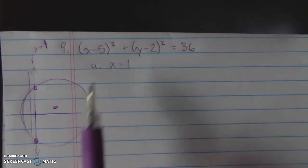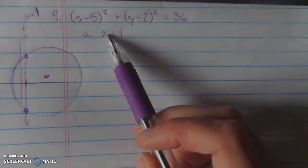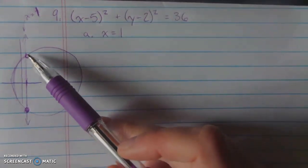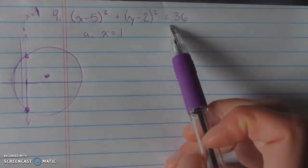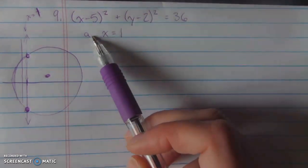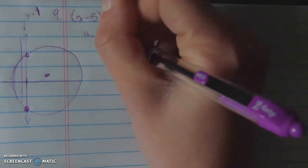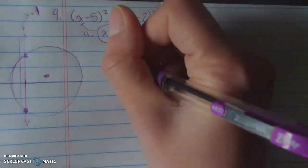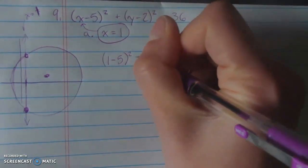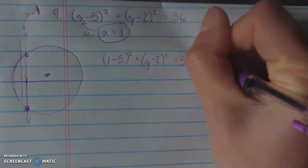But we can solve this with algebra. Because, if I'm looking at this, I know that these two things have to be true if they share a point. So what I can do is I can say, well if x equals 1, everywhere I see an x, I can just write 1. And let's do that real quick. 1 minus 5, instead of x minus 5, and I'm going to square that, I'm going to add that y minus 2 squared, and I know that that's going to end up with an answer of 36.